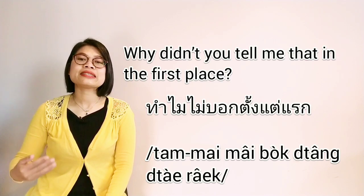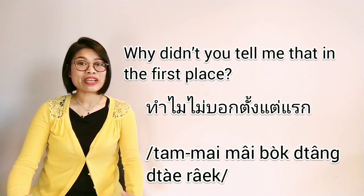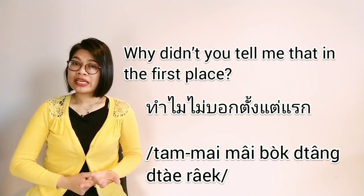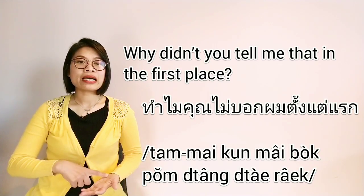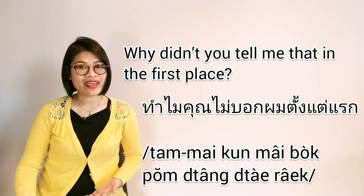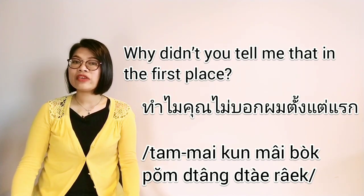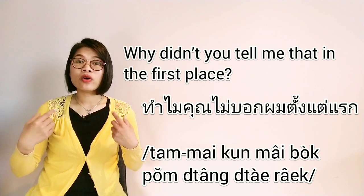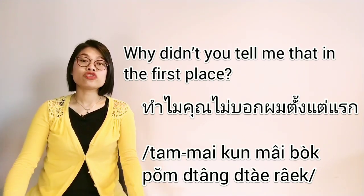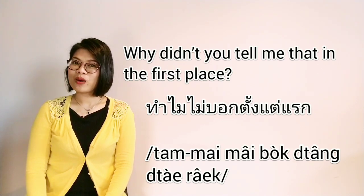ทำไมไม่บอกตั้งแต่แรก. This is casual speaking — in practice I drop the subjects 'I' and 'you.' If you'd like to include them you can say ทำไมคุณไม่บอกผมตั้งแต่แรก. But as I always say, if you know who the 'I' and 'you' are, you can drop them and just say ทำไมไม่บอกตั้งแต่แรก.